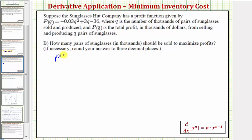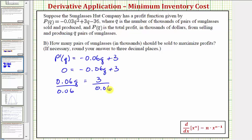Again, we already know that P prime of Q is equal to negative 0.06 Q plus three. So to find the critical numbers, we'll set P prime of Q equal to zero and solve for Q. If P of Q does have a maximum value, it will occur at a critical number. Let's go ahead and add 0.06 Q to both sides. That would give us 0.06 Q equals three. And then we'll divide both sides by 0.06. Simplifying, we have Q equals three divided by 0.06 is 50. So notice how we only have one critical number.